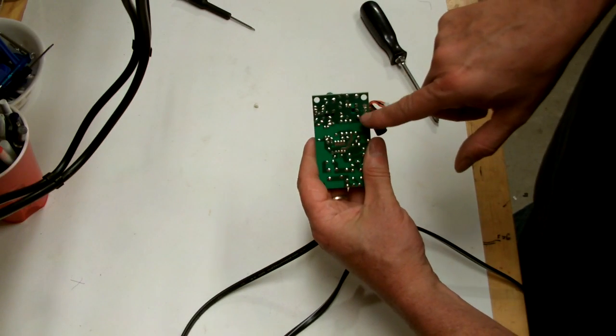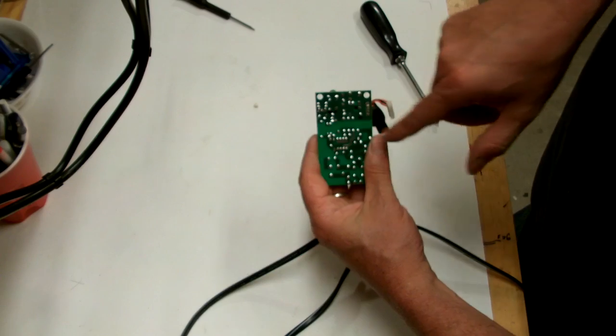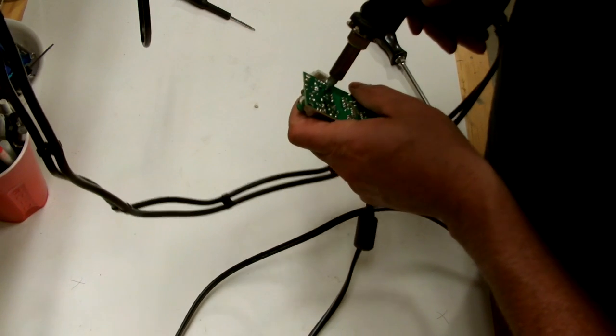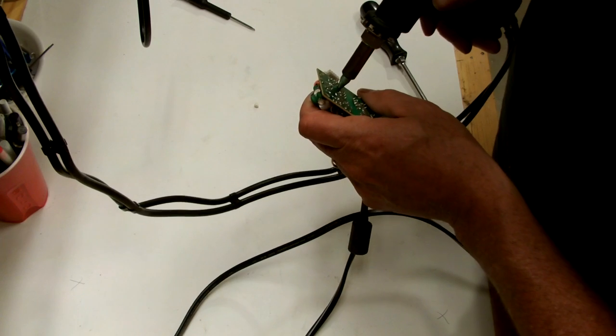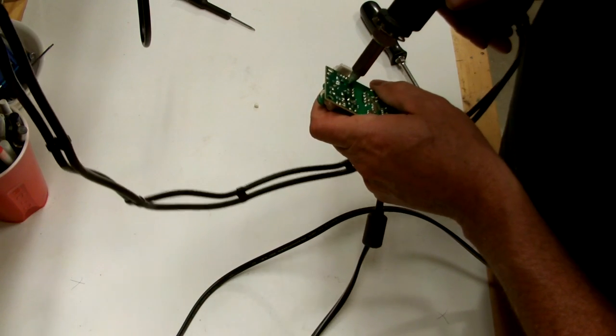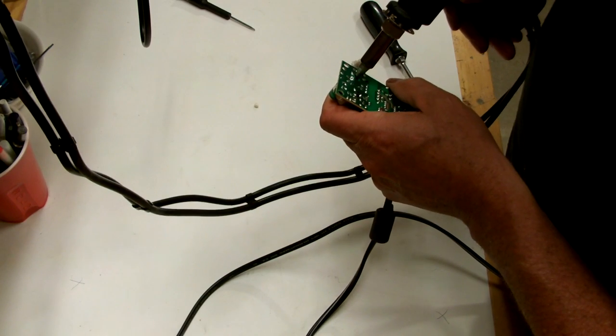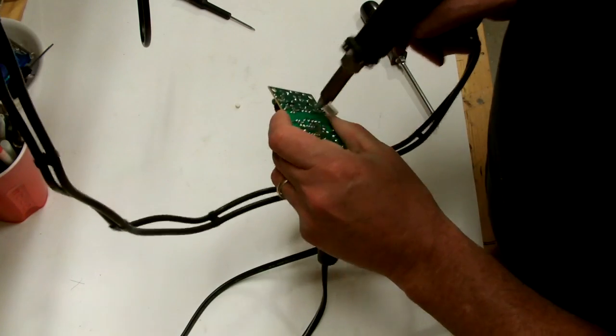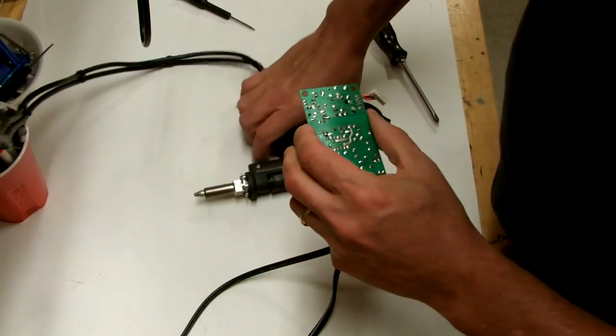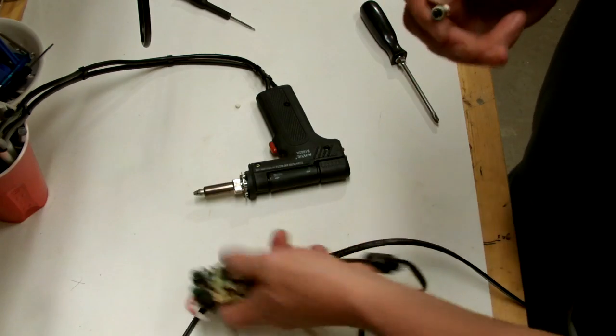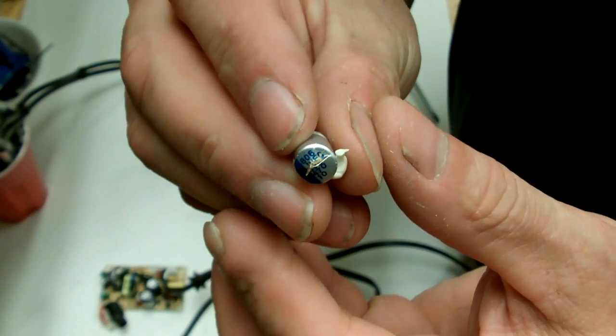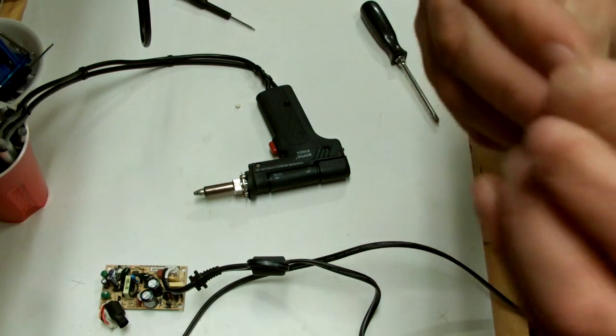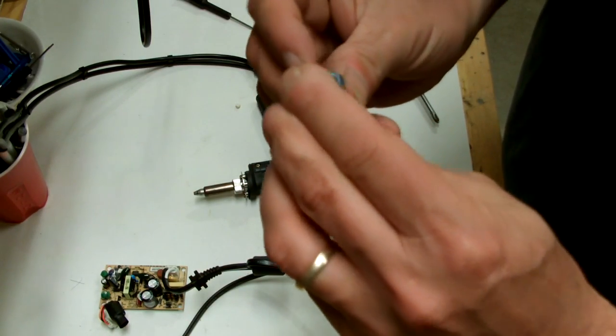So I just marked my circuit board where I want to pull the solder just to make it easier. Here you can see our blown out cap. See the top's broken out. This one's a 470 microfarad 10 volt.